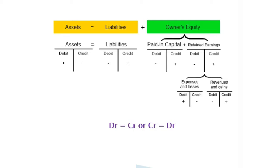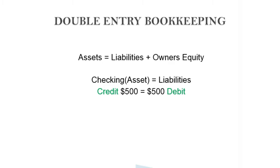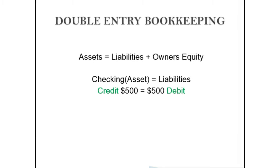Let's take a look at this more in detail. The accounting equation is assets equals liabilities plus owner's equity. Any transactions recorded on the left side of the equation must equal the right side, and whatever you record on the right side must equal the left side. That is why your debits must equal your credits. Now let's take a look at an example: Mark paid a bill of $500 that he received 15 days ago. Which accounts are affected?